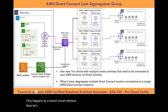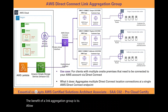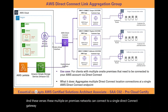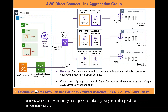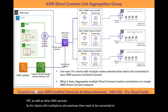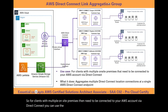Now let's go over AWS Link Aggregation Groups, also known as Direct Connect LAGs. The benefit of a link aggregation group is to allow you to connect multiple on-premises networks, which could be spread across the country, to a single Direct Connect gateway. That gateway can then connect to a single or multiple virtual private gateways, allowing your multiple on-premises networks to connect to your VPC as well as other AWS services. For clients with multiple on-site premises needing to connect via Direct Connect, you can use the aggregation offered by link aggregation groups.